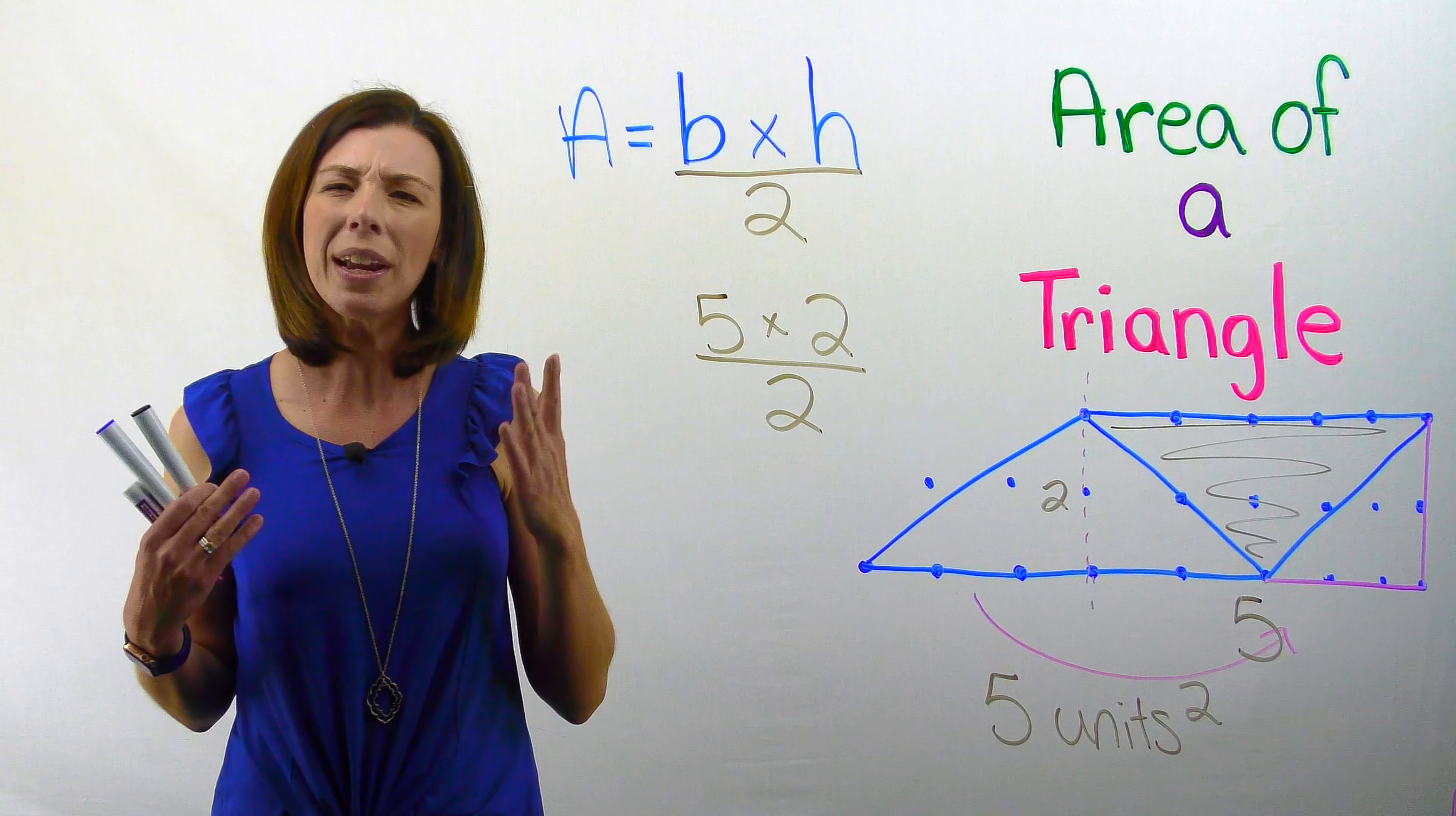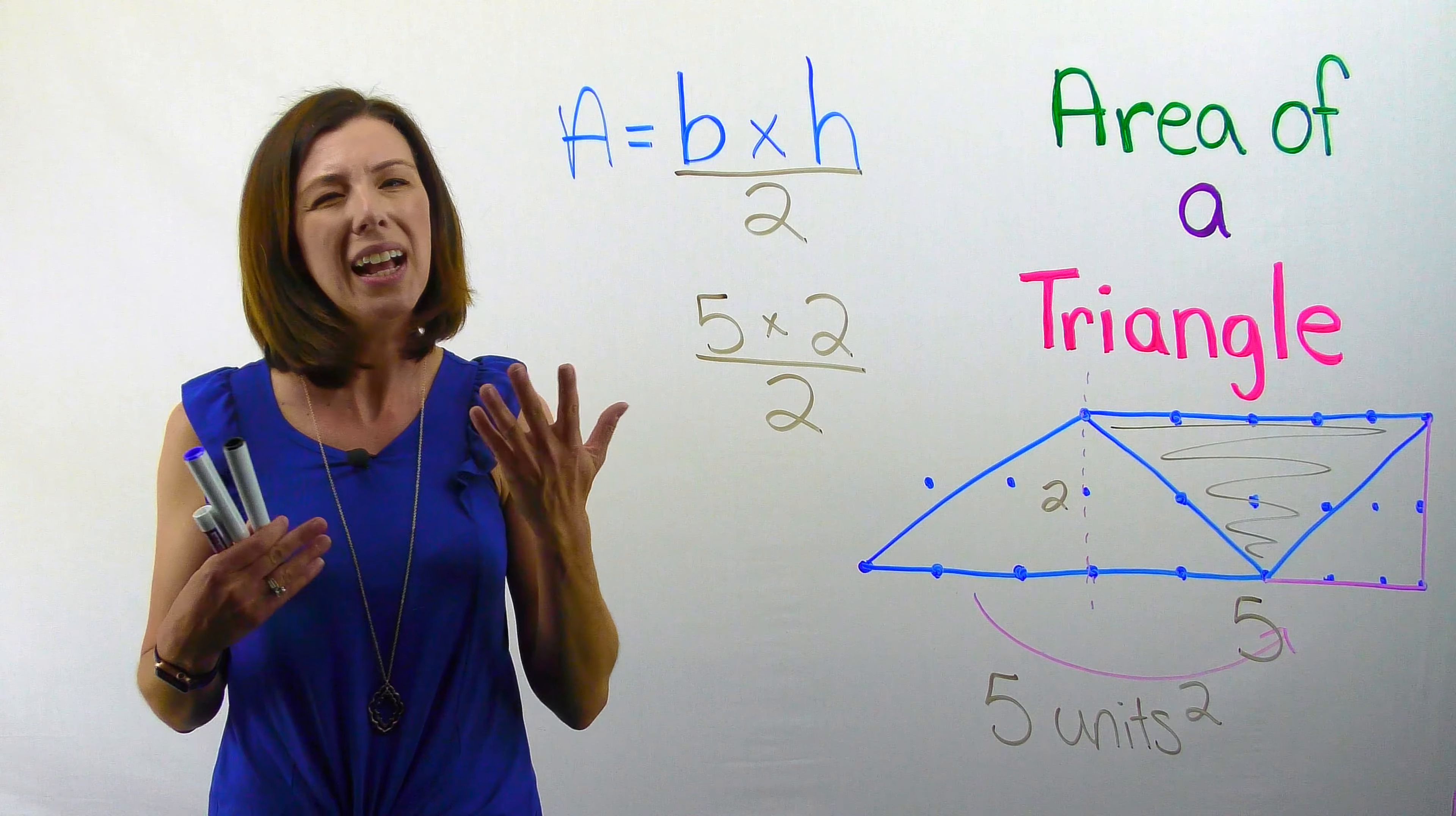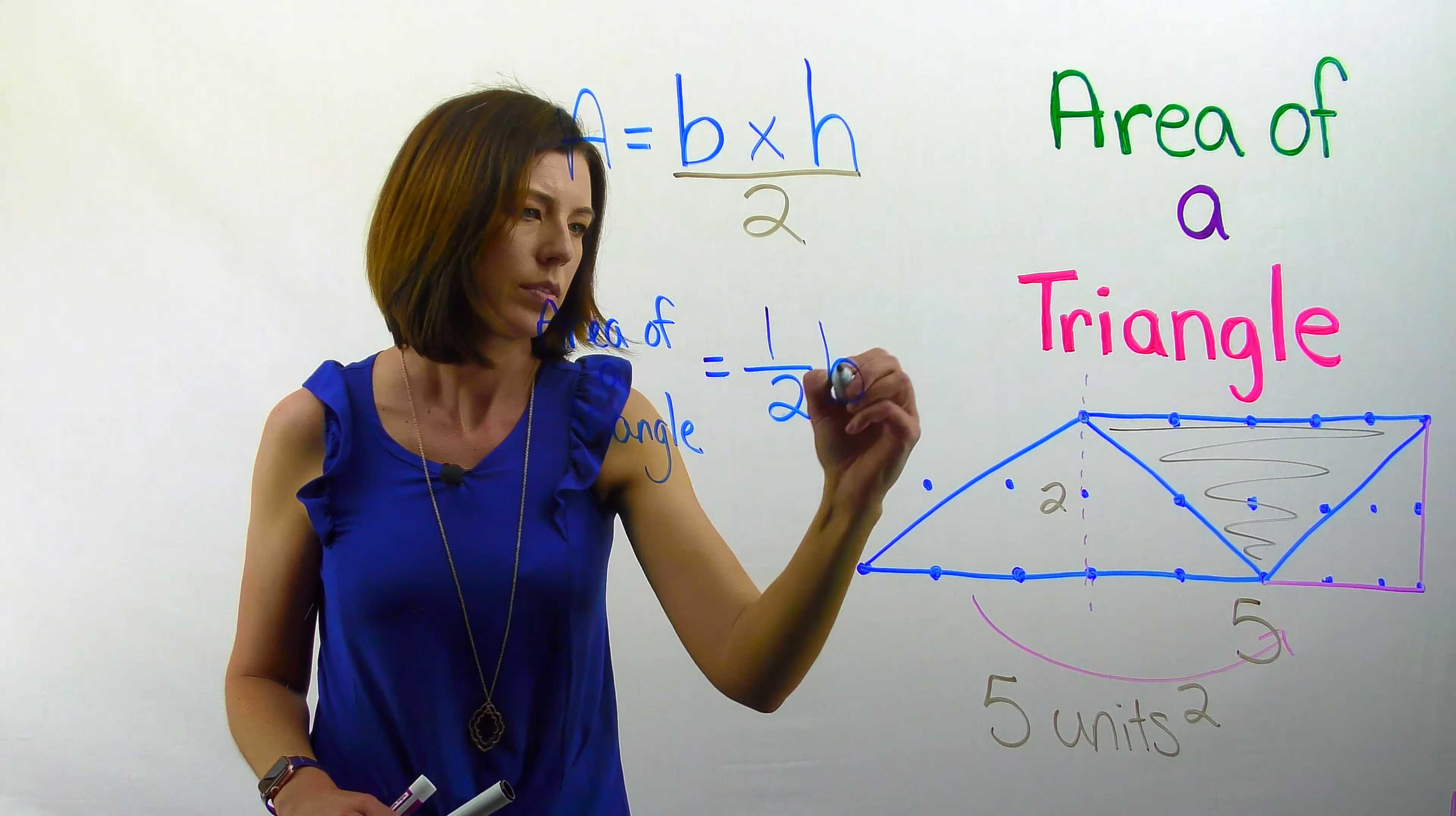Now you might be thinking, wait a second, I thought the area of a triangle was one half base times height. Let's see if that's any different. One half base times height. I know again that my base is five. My height is two.